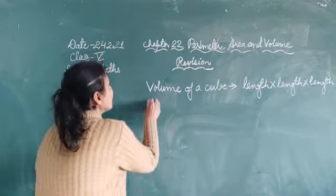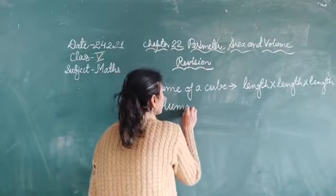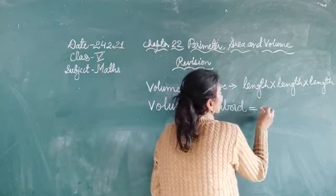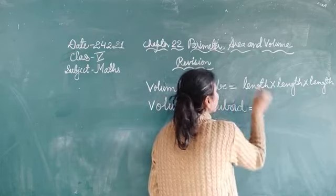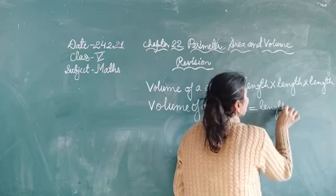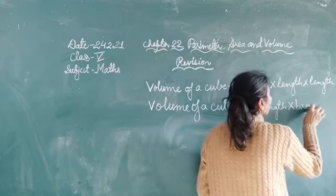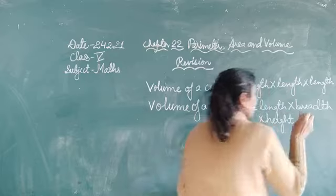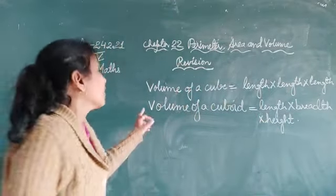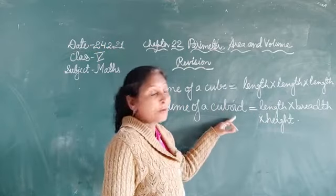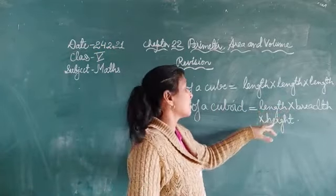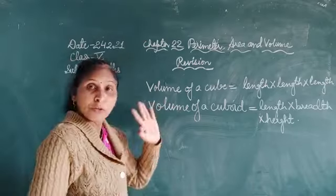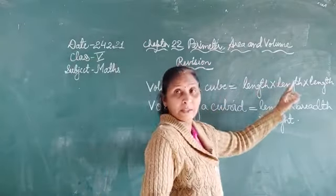Now the formula of volume of a cuboid is equals to length multiplied by breadth multiplied by height. Students, you must learn this formula. The formula of volume of a cube is length multiplied by length multiplied by length.